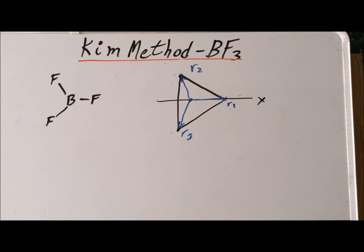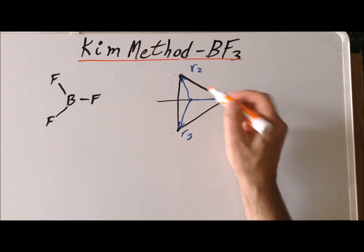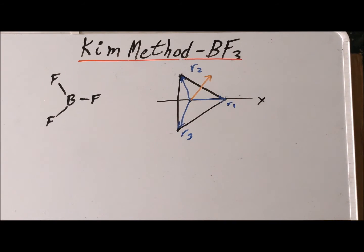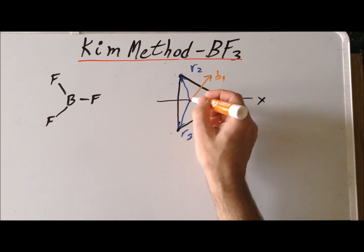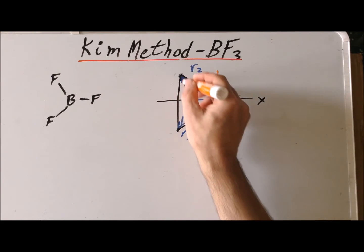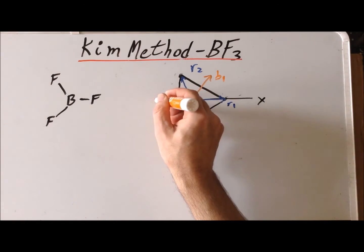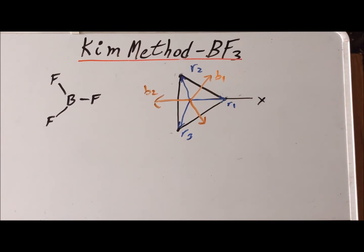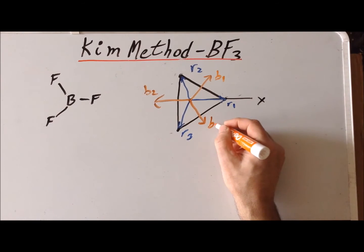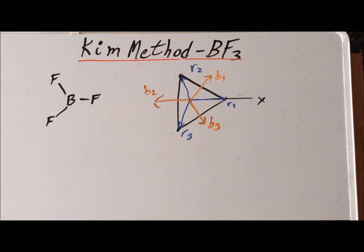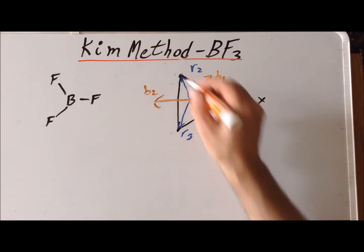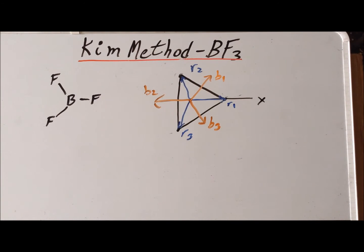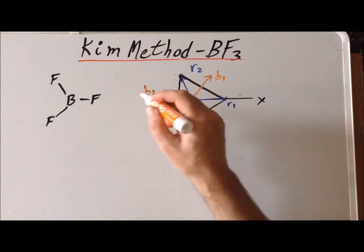Next, we want to find the bending motions for boron trifluoride. We can represent the bending motions as a vector that bisects a particular angle. So we have the angle going from R1 to the origin to R2, and if we have a vector in this direction, we call this bend 1, or B1. Similarly, we can have a vector that bisects the angle between R2 and R3 at the origin, which we call B2. And last but not least, the third bending motion bisects the angle between R1 and R3, which we call B3. Just as before, we need to assign coordinates to these particular vectors.